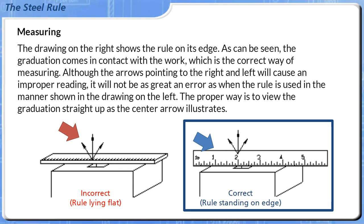The drawing on the right shows the rule on its edge. As can be seen, the graduation comes in contact with the work, which is the correct way of measuring. Although the arrows pointing to the right and left will cause an improper reading, it will not be as great an error as when the rule is used in the manner shown in the drawing on the left. The proper way is to view the graduation straight up as the center arrow illustrates.